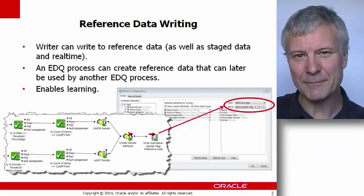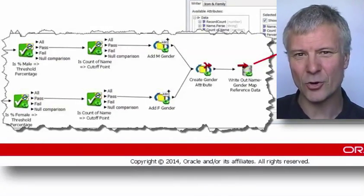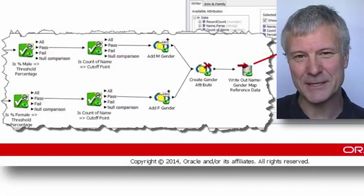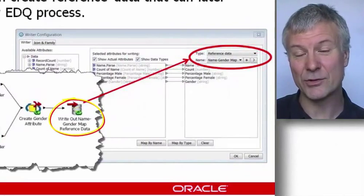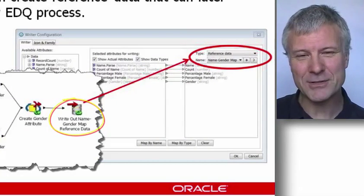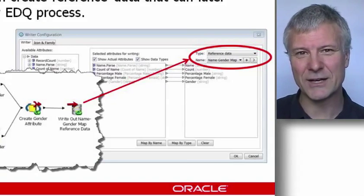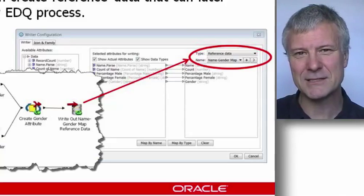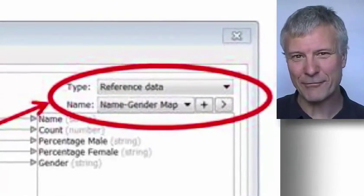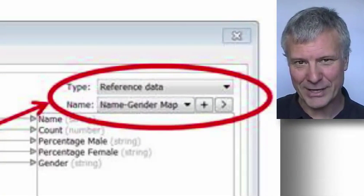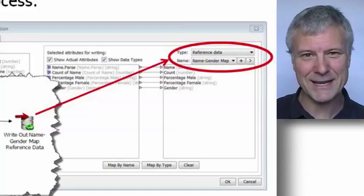You can put together your own process in EDQ — it can be as simple or as complex as you need it to be. At the end of that process, you can put on a writer processor. That writer processor can create staged data, it can write to a real-time stream or to a web service, but it can also write out reference data. So you can create EDQ processes and at the end of them put on a writer that writes out reference data.